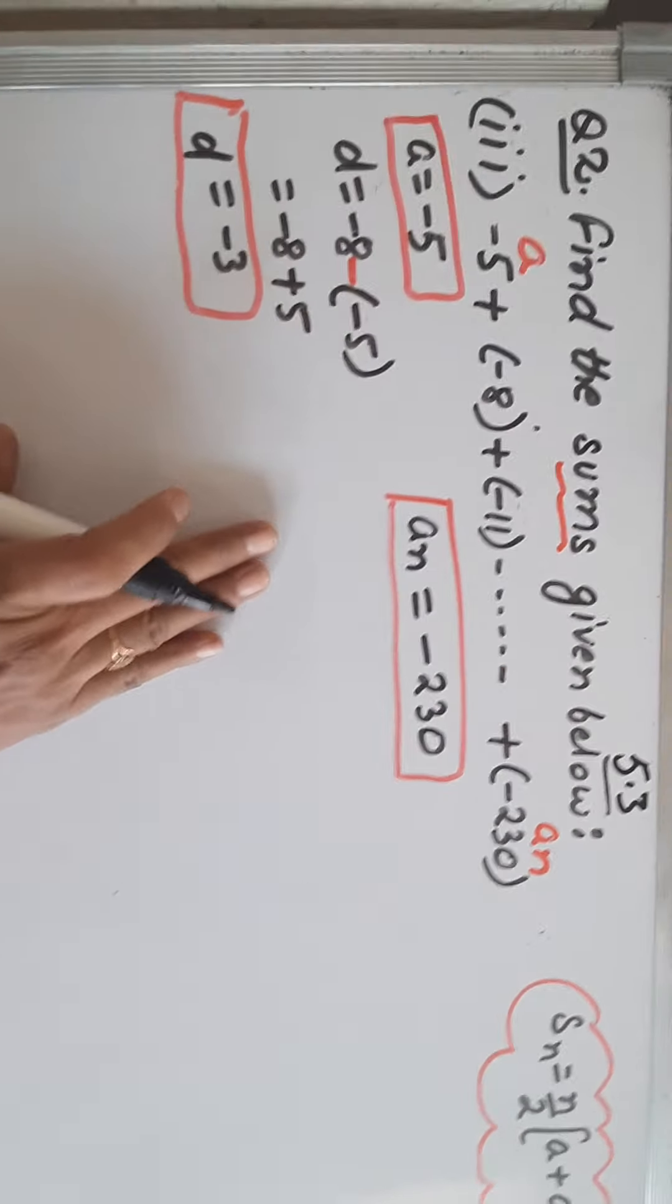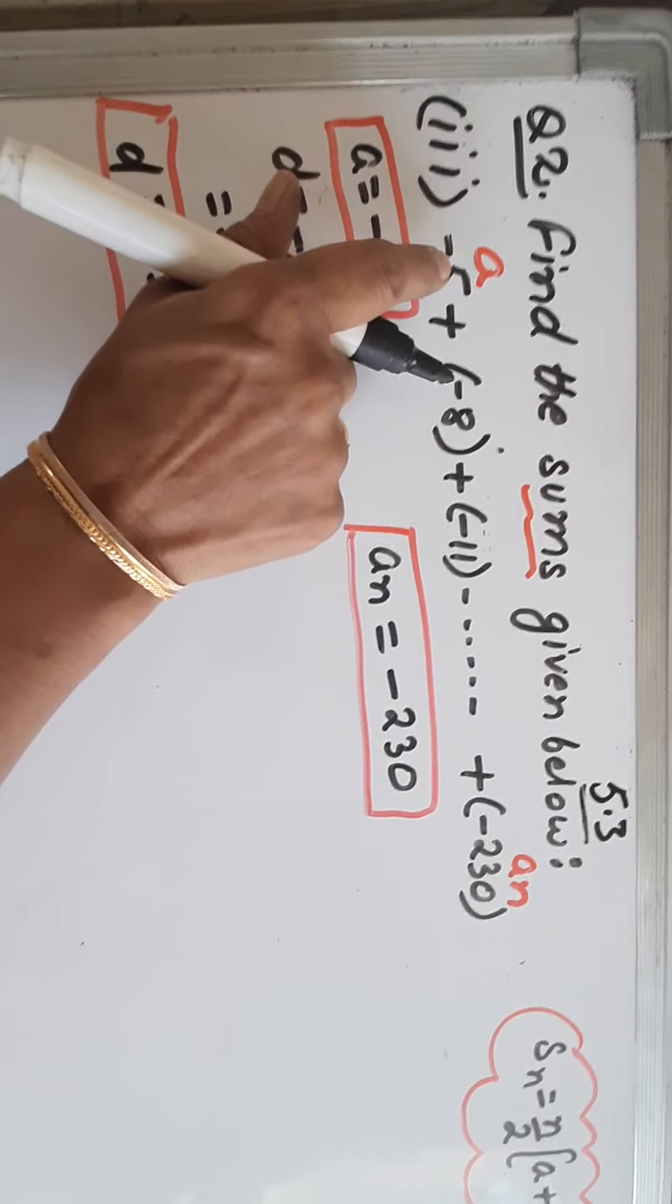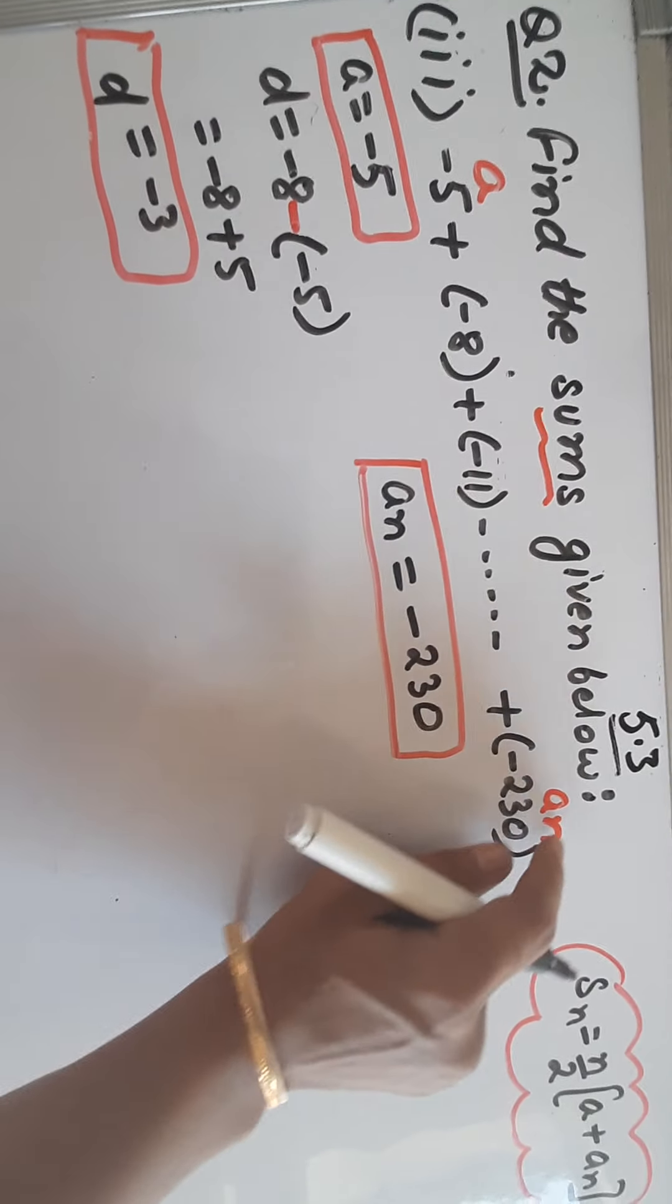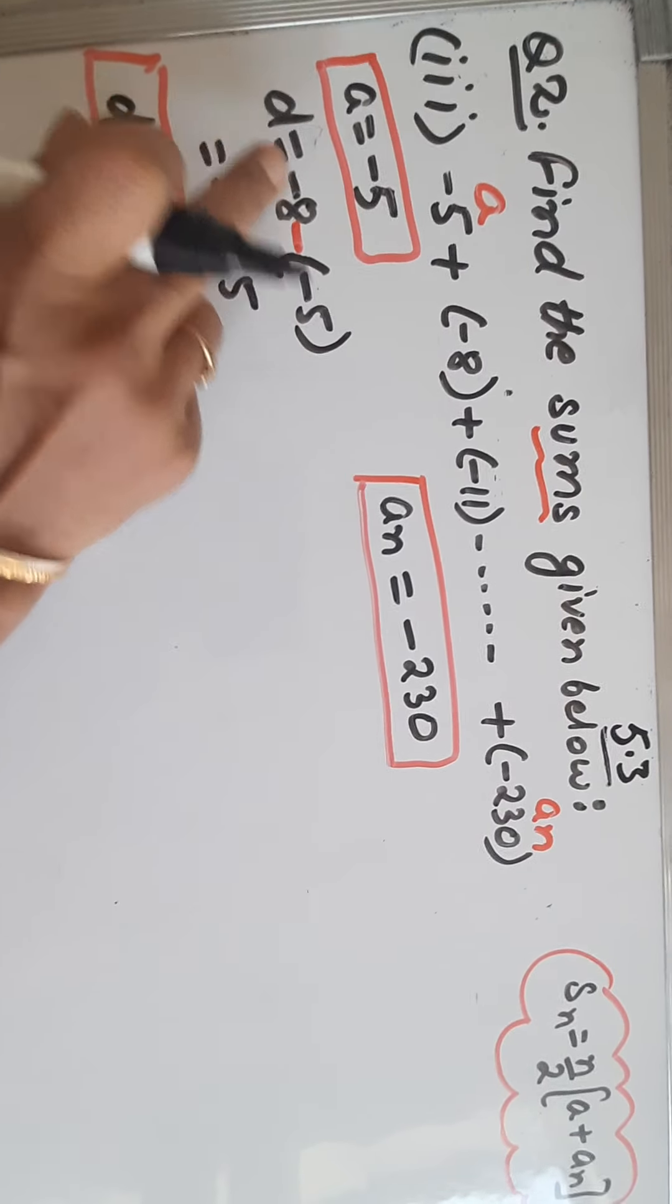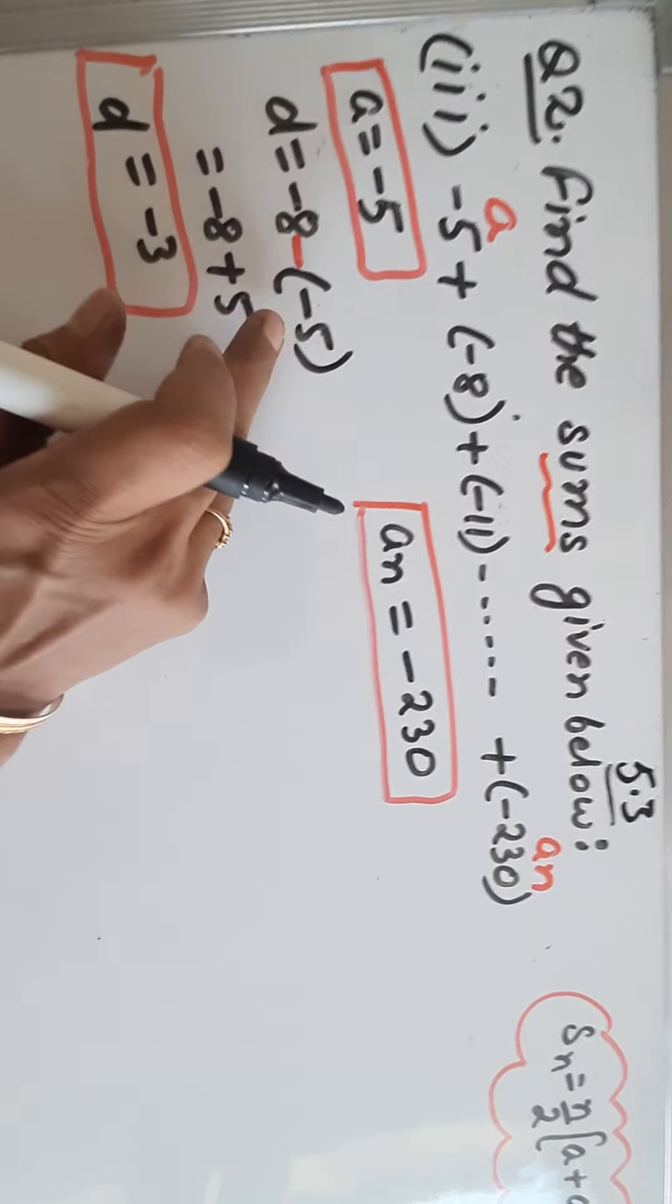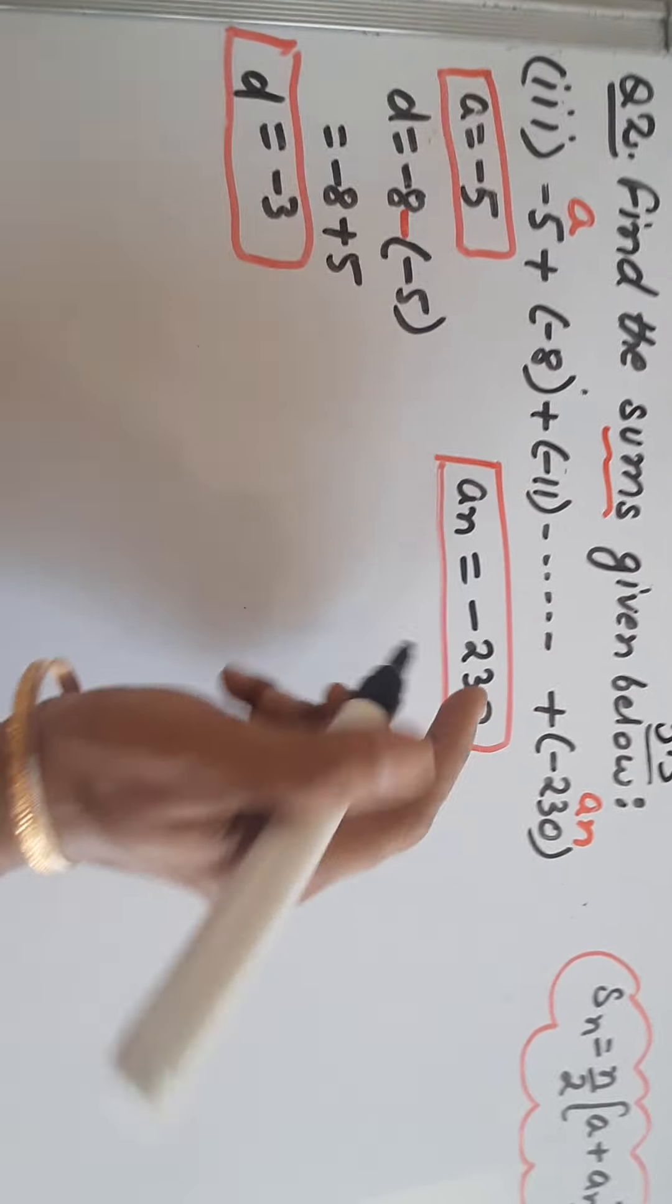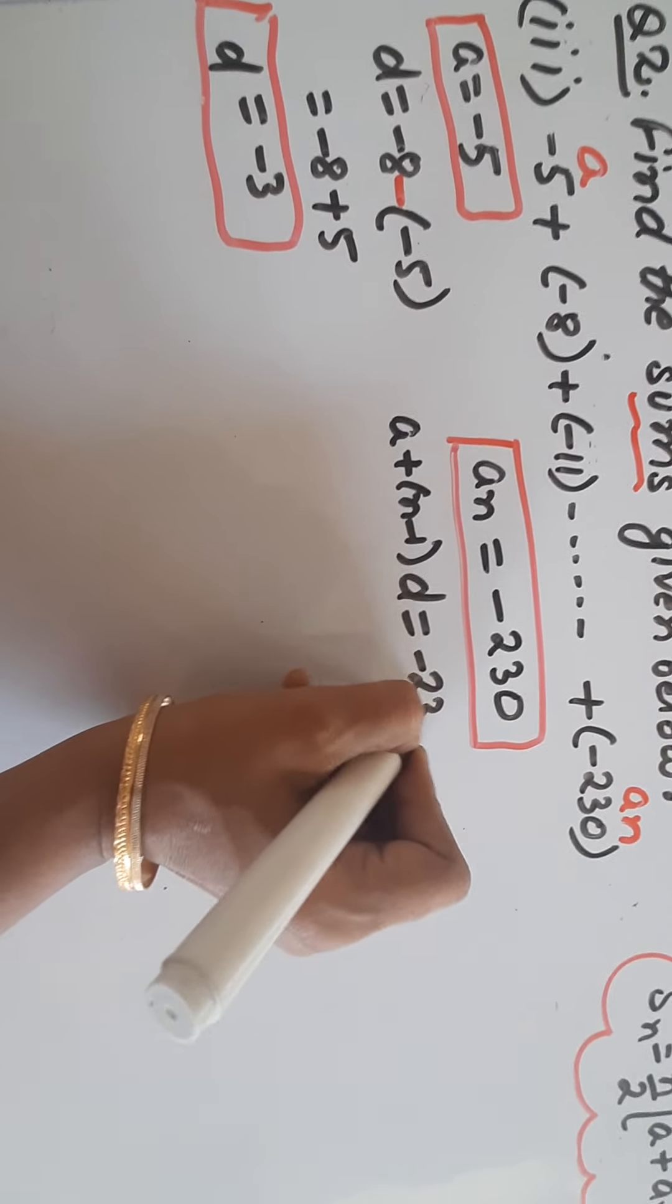I am doing one more part, the third part. The AP is minus 5, minus 8, minus 11 and so on up to minus 230. Again the term is given with plus, that is AN. First term A is minus 5. Common difference, D is minus 8, which is the second term, minus the first term, so two signs, minus minus plus, D will be minus 3. As I told you, whatever is given, start from there. AN is given, so we start with AN formula to get the value of N.